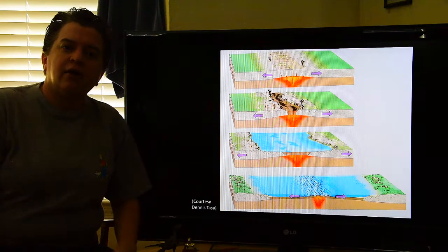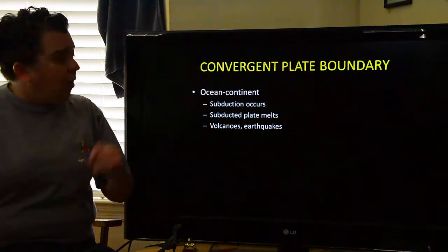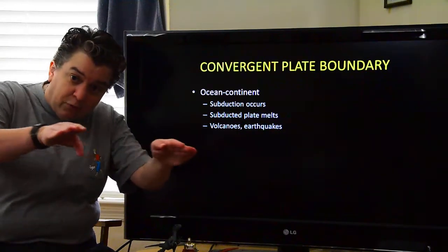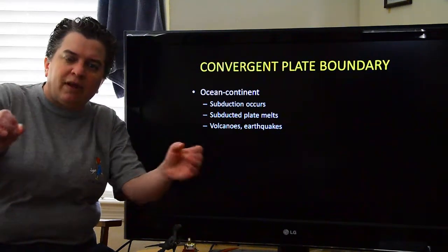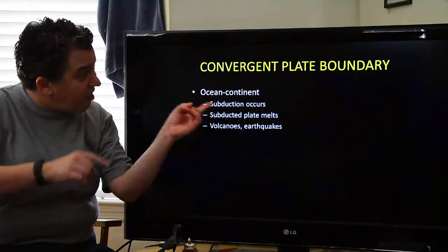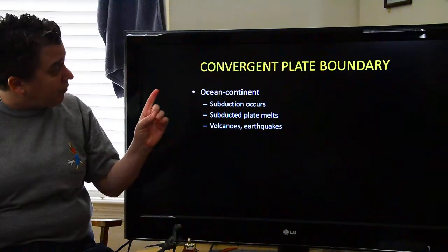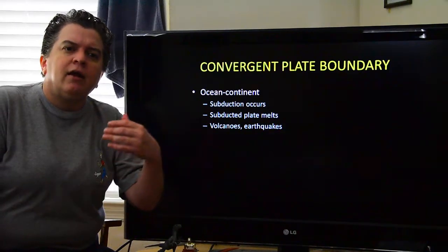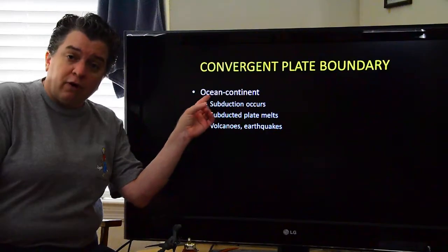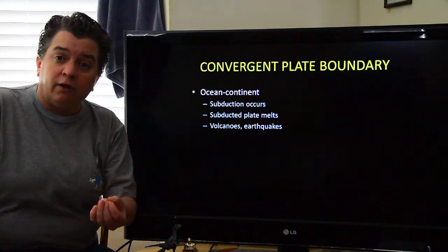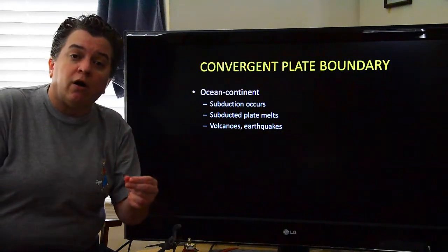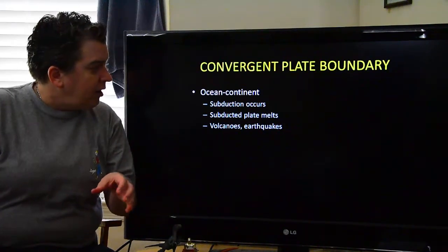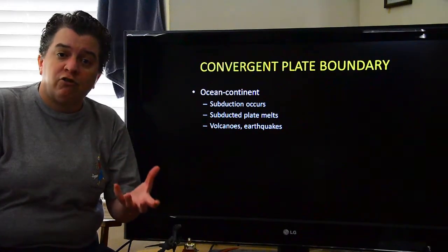That's a divergent boundary where plates are moving away from each other — you can expect volcanoes and earthquakes at those locations. Now we also have what's called a convergent plate boundary. If on Earth there are some places where plates are moving away from each other, there's got to be other places where plates move towards each other, and that's a convergent boundary. You can have an ocean plate — remember the crust is either basalt or granite. Ocean crust is made from basalt, continental crust is made from granite, and basalt is much denser than granite.